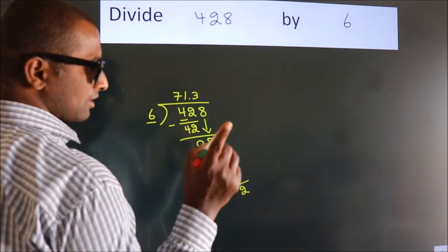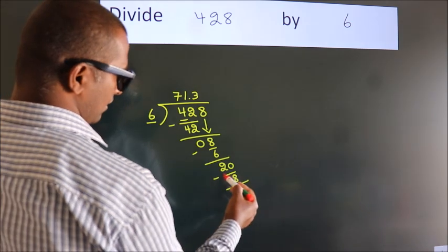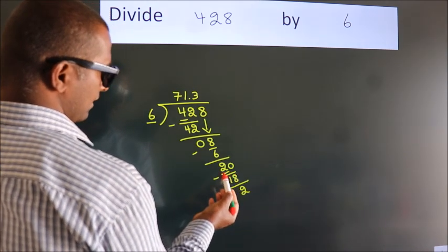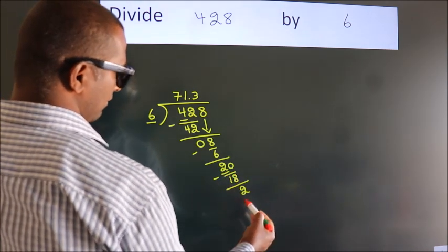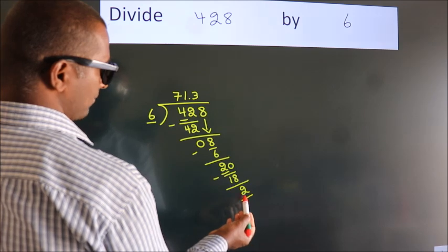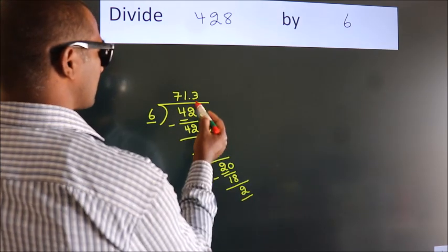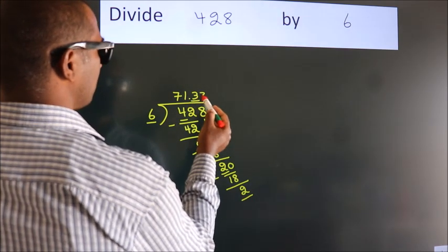Now you observe. We had 2 here and we got 2 again. That means this number keeps on repeating.